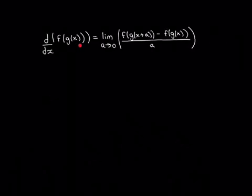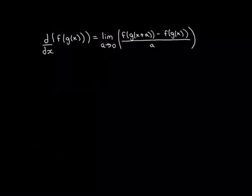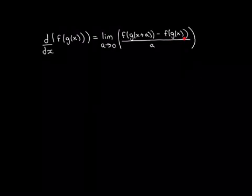We begin by going to the definition of differentiation. If we want to differentiate f of g of x, by definition this is the limit as a approaches 0 of the function evaluated at x plus a — that is f of g evaluated at x plus a — take away the value of the function at x, which is f of g of x, and then divide that by a.